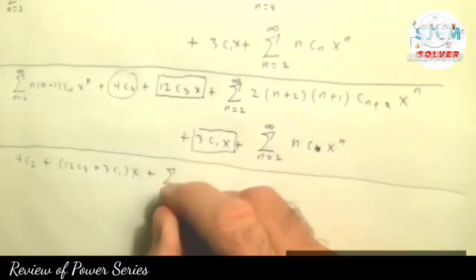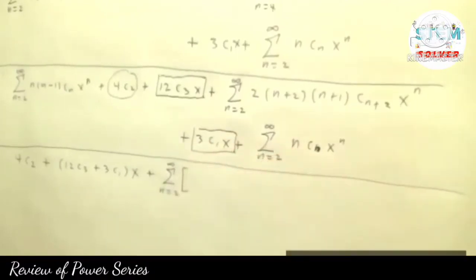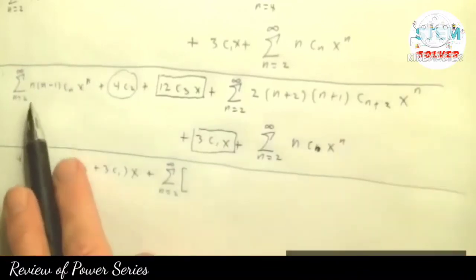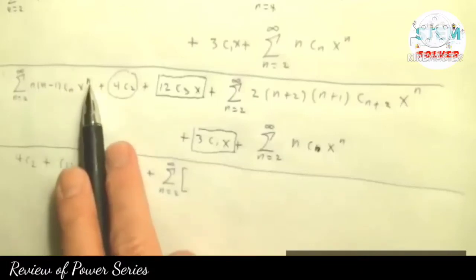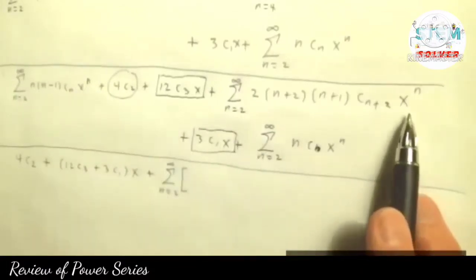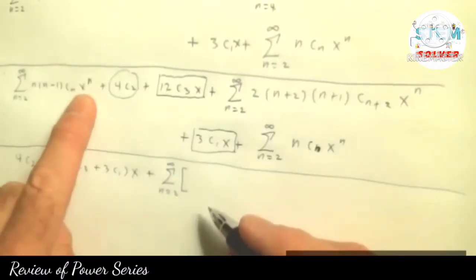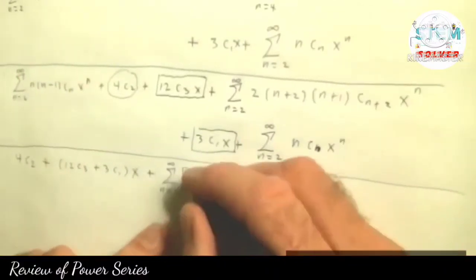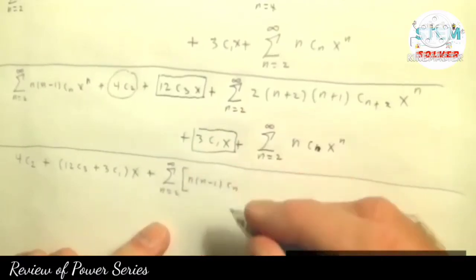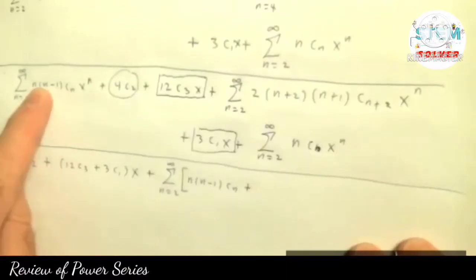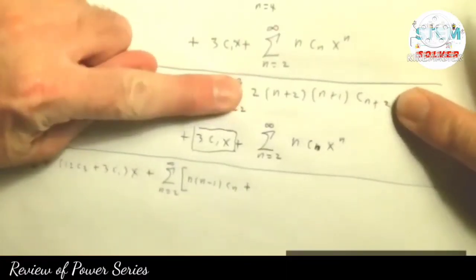So what you do here is write a series from n equal 2 to infinity. We're going to factor out x to the n and put it at the very end. After you re-index, if they all start at the same value of n, all the x's should have the same power — and you see it's x to the n, x to the n, x to the n. If after re-indexing they do not start at the same power of x, then you did something wrong. Inside the series we take n(n minus 1)cn from the first, then 2(n plus 1)(n plus 2)cn plus 2 from the second, and 3ncn from the third.